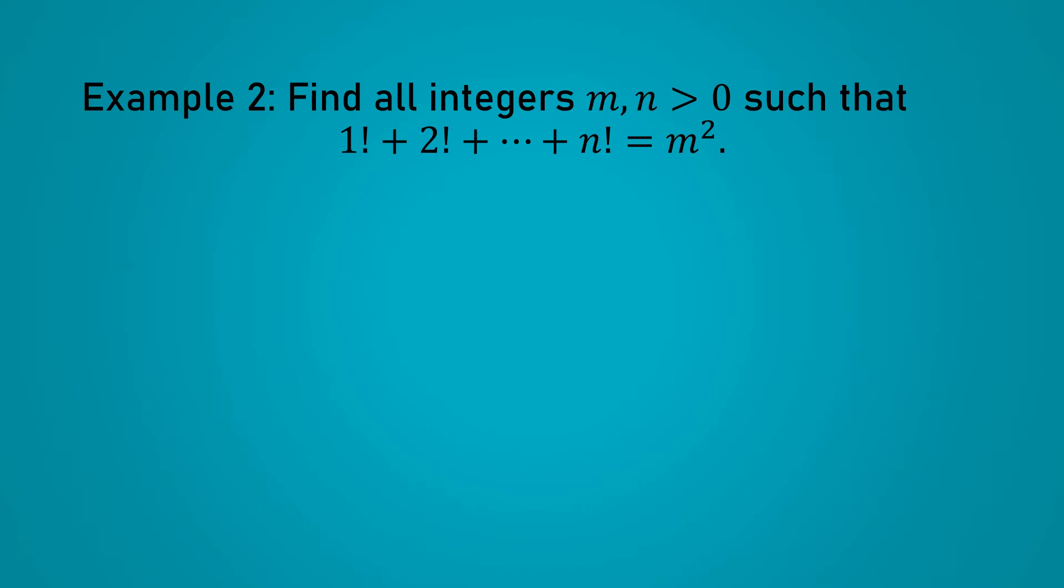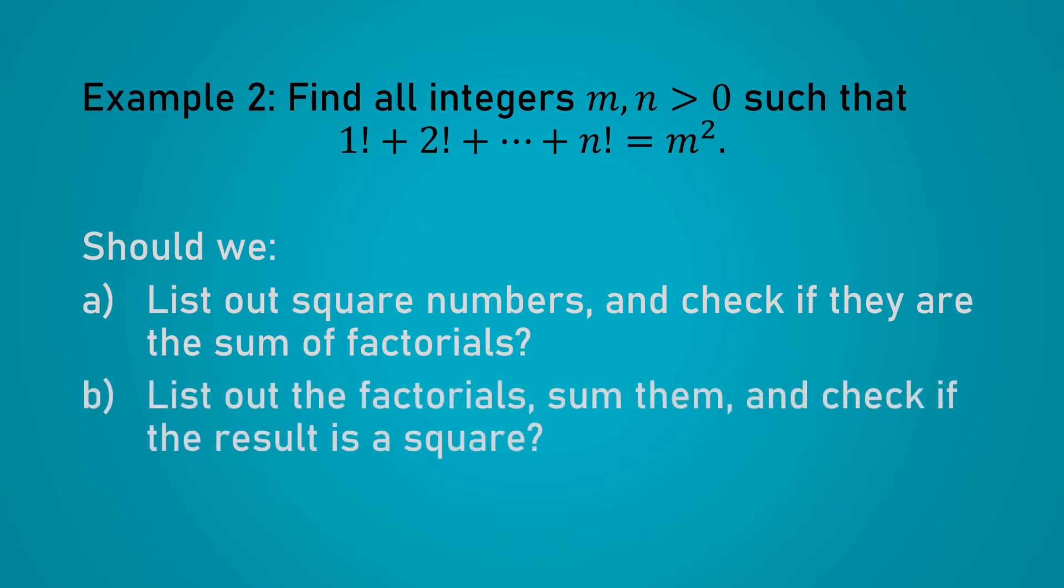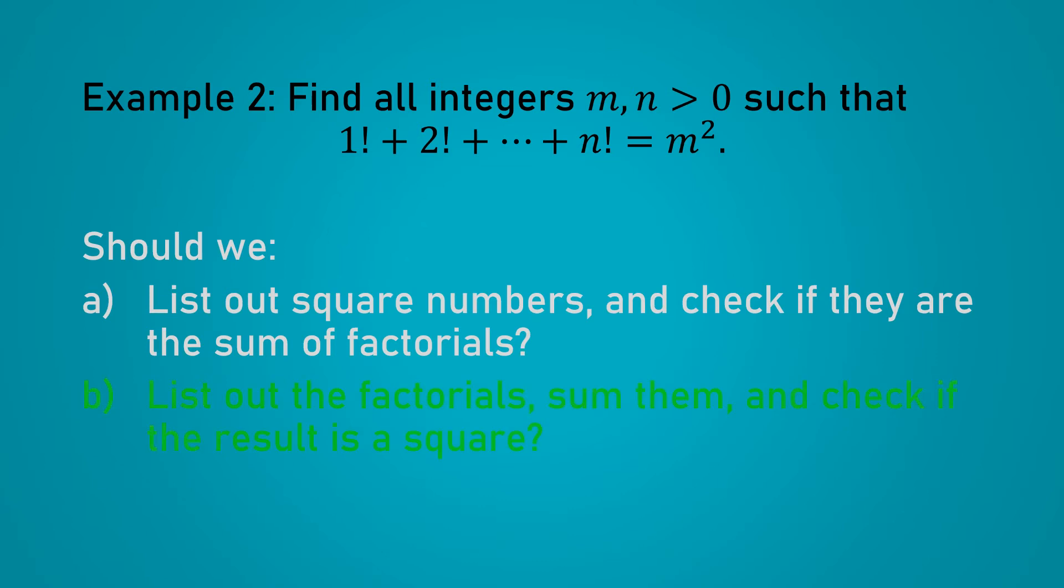I'm sure you can tell that we're about to do some experimentation again. But before we begin, let me ask a question that might sound a little silly. Should we list out all the square numbers up to a certain point and check if they are the sum of the first n factorials? Or should we list out all the factorials to a certain point, sum them up, and then check whether the result is a square number?